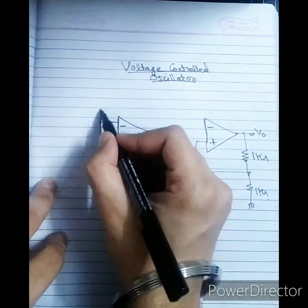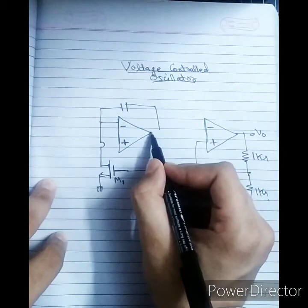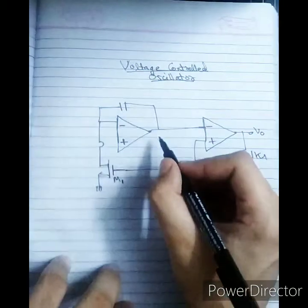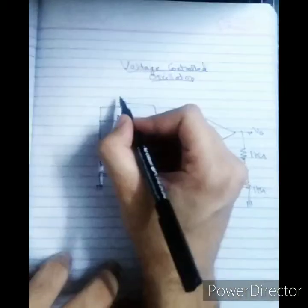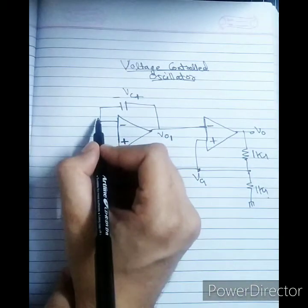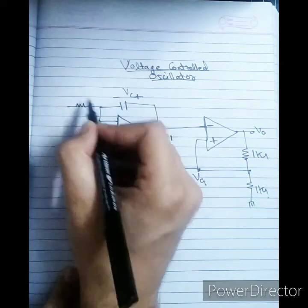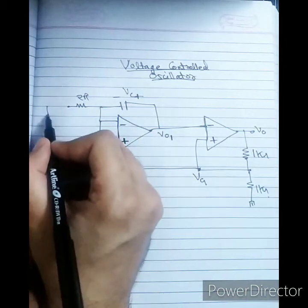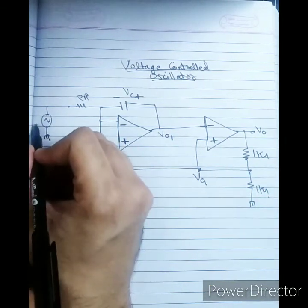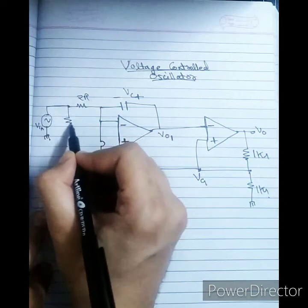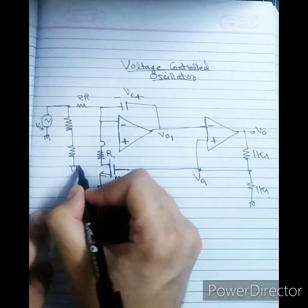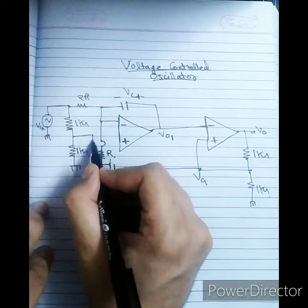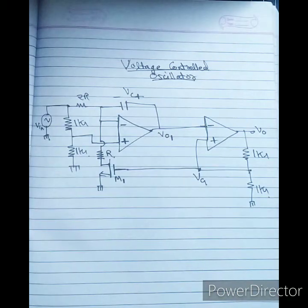And then this is the capacitor. The output of op-amp 1 is connected as the inverting terminal of op-amp 2. Let's mark this point as V01, and this potential as Vc. The circuit continues with a 2R resistor here and 1R resistor here. I will apply VIN here. This is divided by 2 — you will see why when we analyze the working. This 1 kilo ohm resistor is connected to the positive terminal. This is the circuit for the Voltage Controlled Oscillator.